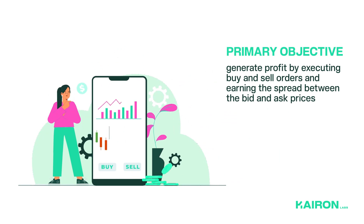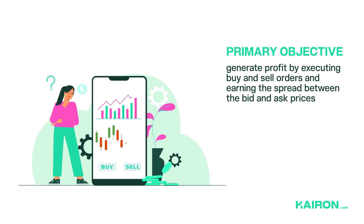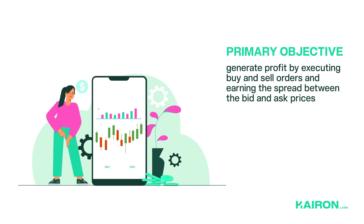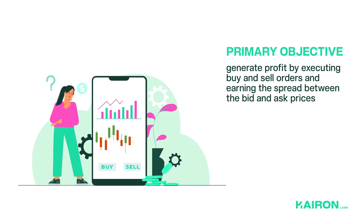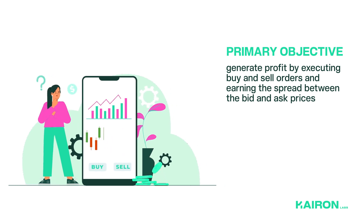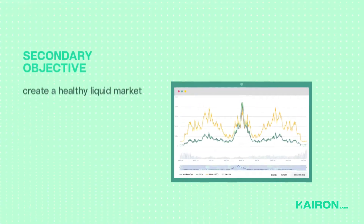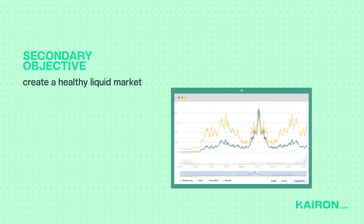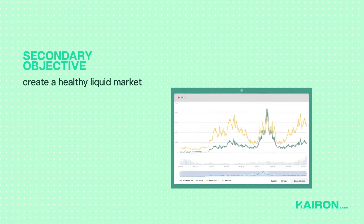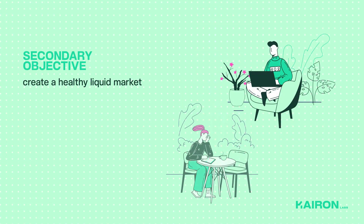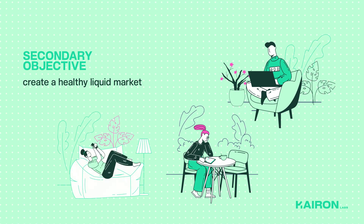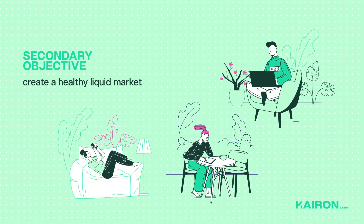The primary objective of a crypto market making bot is to generate profit by executing buy and sell orders and earning the spread between the bid and ask prices. A secondary objective is to create a healthy liquid market where participants can enjoy an optimal trading experience.